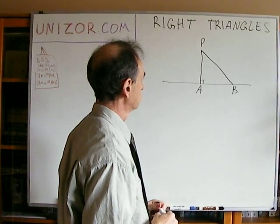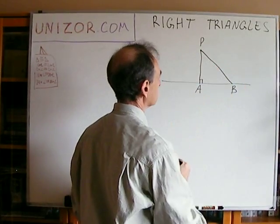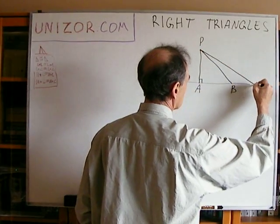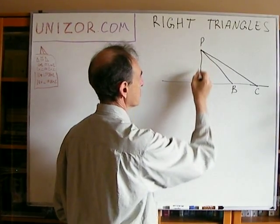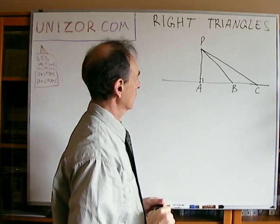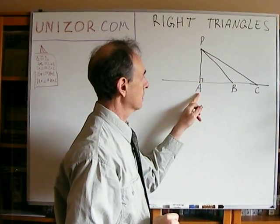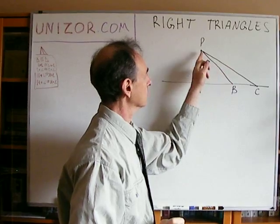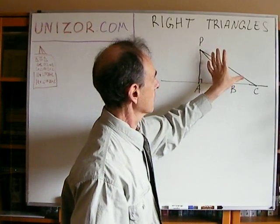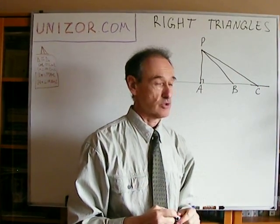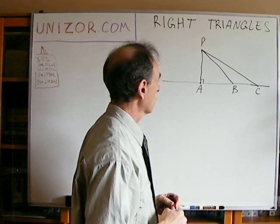The second property I'd like to talk about is that if we have two different segments falling at different distances from the foot of the perpendicular, then if the point is further from that base, the segment connecting that point would be longer as well. The further we go, the longer this segment becomes. Intuitively it's quite obvious, but let's do it in a more rigorous way.